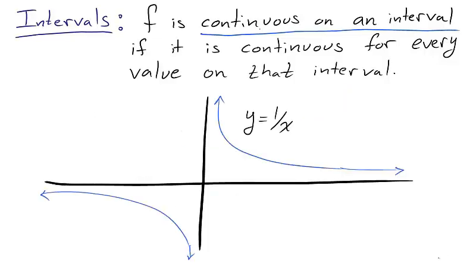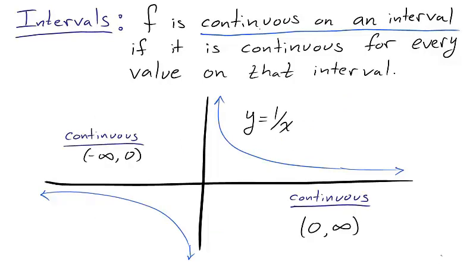For example, take the graph y equals 1 over x. The function is continuous on the open interval negative infinity to 0 and continuous on the open interval 0 to infinity. In other words, y equals 1 over x is continuous on any interval which doesn't contain 0.